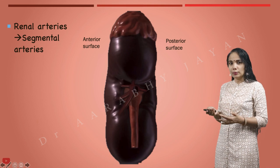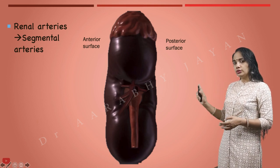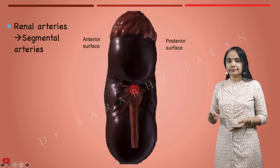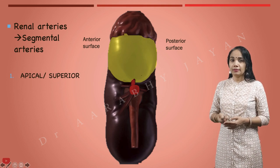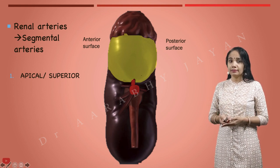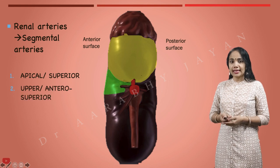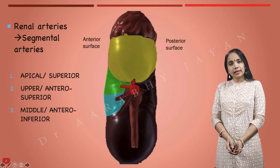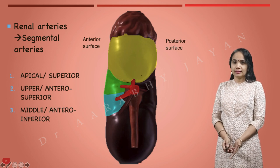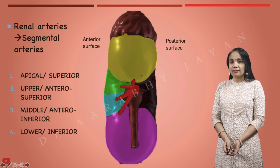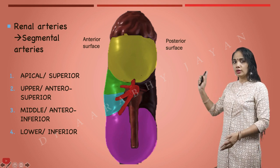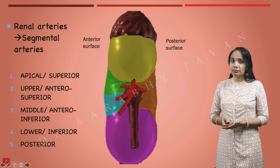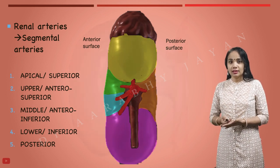We can count 1, 2, 3, 4, and 5 segmental branches. The first supplies the apex of the kidney — called the apical branch. The second is the antero-superior branch supplying the antero-superior segment. The third is the antero-inferior branch supplying the antero-inferior segment. The fourth is the lower (inferior) branch supplying the inferior segment. The fifth is the posterior segmental artery, supplying the posterior part of the kidney.